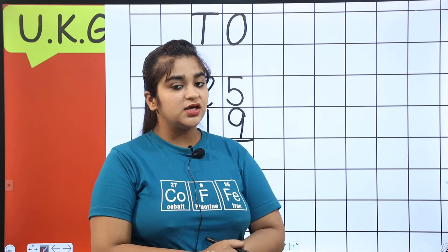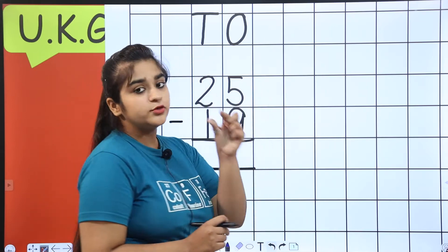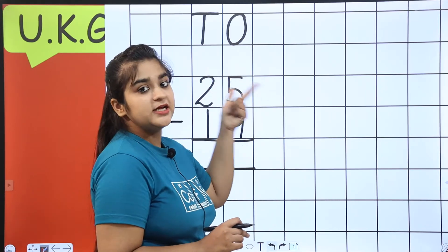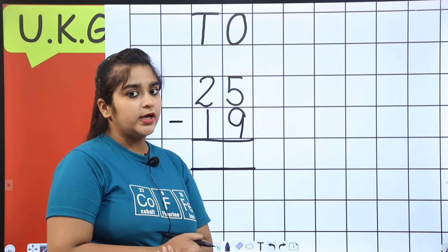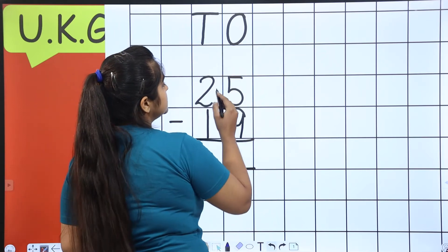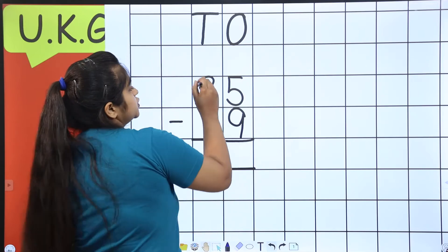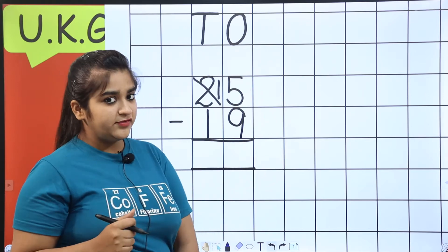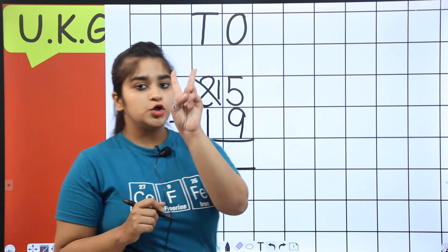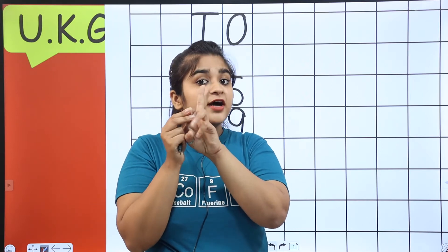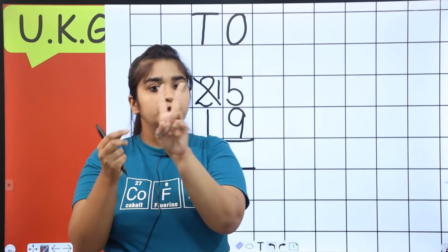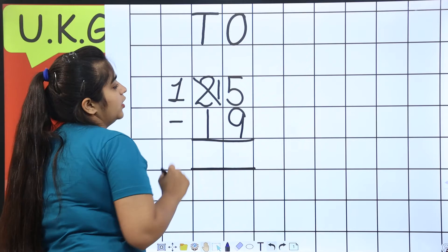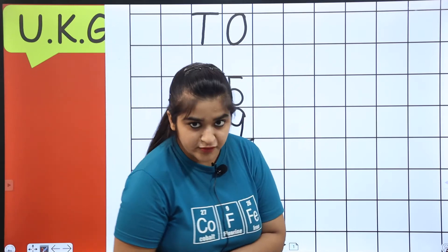Now, 5 minus 9 is not possible because 5 is a small digit and 9 is a big digit. How will we do? We will say 5 goes to our friend 2 and borrows 1. So, 5 went to 2 and asked to borrow 1. So, what did he do? He gave his 1 to 5. And 5 became 15. Now, 15 minus 9.